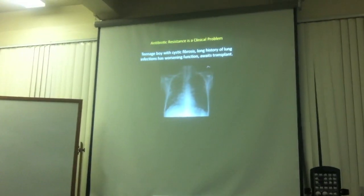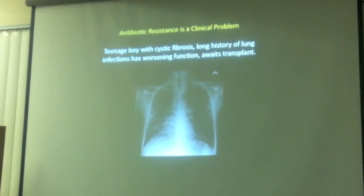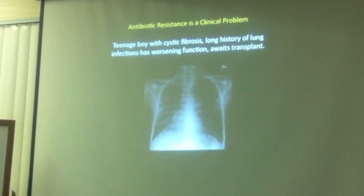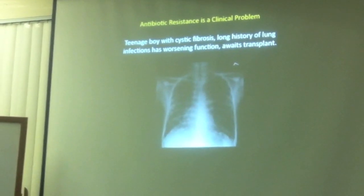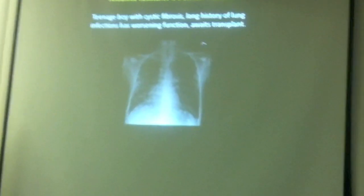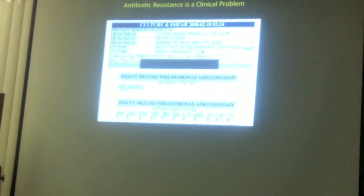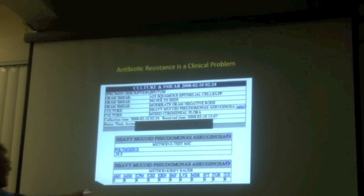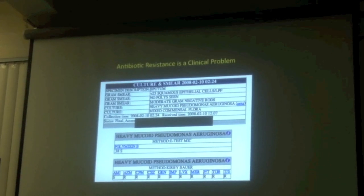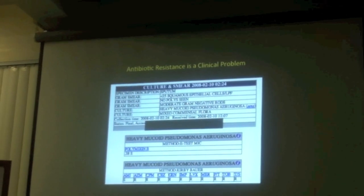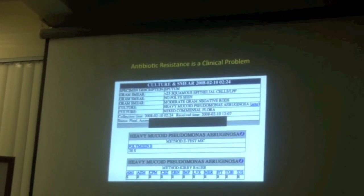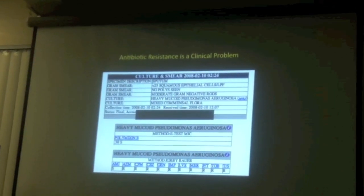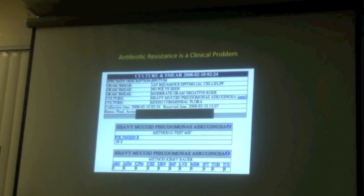In contrast, another patient I saw during the same period was a teenage boy with cystic fibrosis, with a long history of many lung infections, awaiting a transplant. He came in with worse lung function — essentially pneumonia — and what was growing in his sputum was an organism called Pseudomonas that was resistant to essentially all of the antibiotics we have. This was a much more challenging case. He ended up doing okay in the short term, but our choices were much more limited.